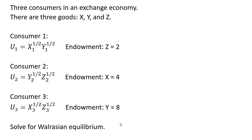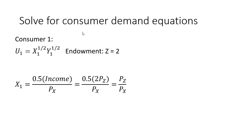We want to solve for the Walrasian equilibrium. Starting with consumer one, we're going to solve for the demand equations. Here's consumer one's utility function over good x and good y, reminding ourselves that consumer one has an endowment of good z that equals 2. Given this Cobb-Douglas utility function, the exponents sum to 1, which means the consumer will spend half his income on good x and the other half on good y. So the demand for good x for consumer one is half his income — 0.5 times income — divided by the price of good x, giving the number of units this consumer can afford.